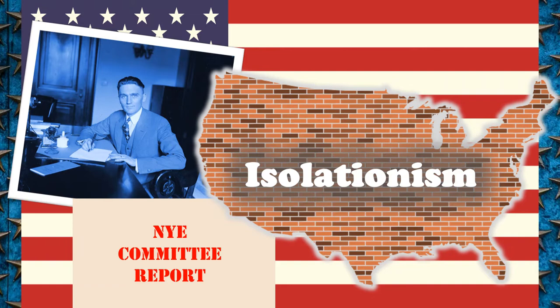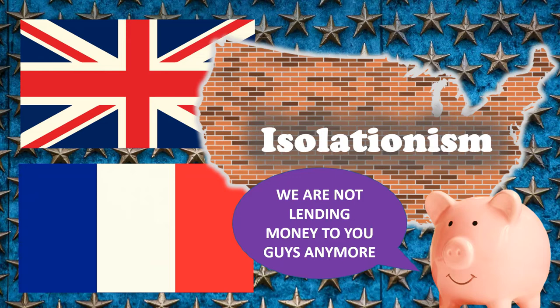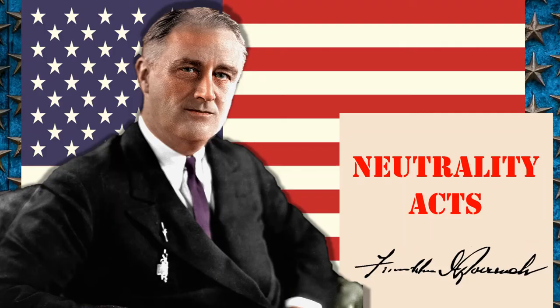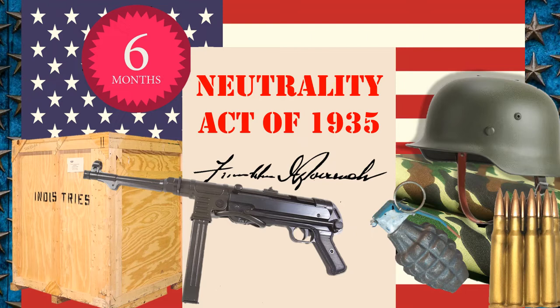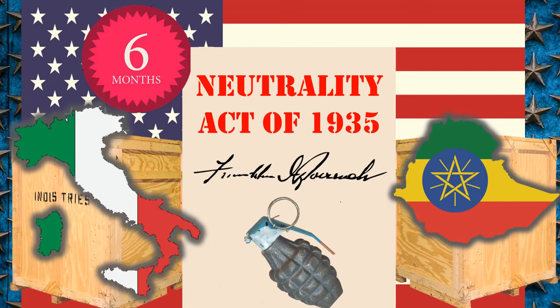Isolationist feelings were strengthened by the Nye Committee report in 1936, which revealed how American munitions companies had greatly profited from the previous war. As Britain and France stopped payment of their war debts, Congress passed an act prohibiting new loans to allies. Further legislation focused on keeping America out of the war. The Neutrality Act of 1935 prohibited Americans from sending arms, munitions, and war equipment to foreign nations at war and was applied to both Italy and Ethiopia, even though Italy had been the aggressor.